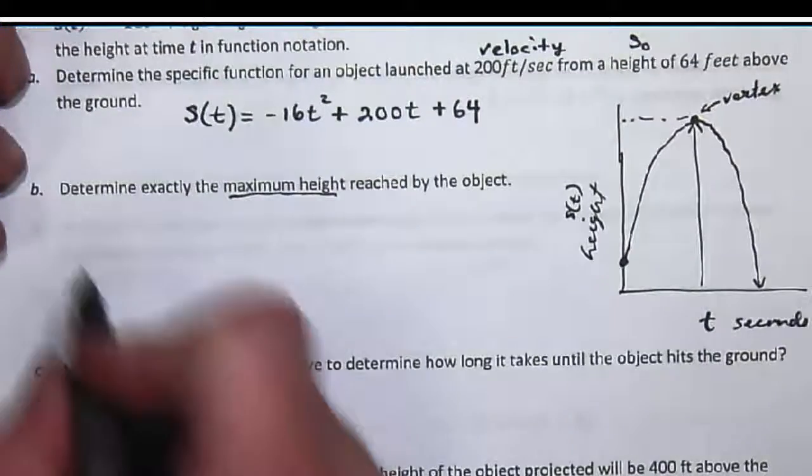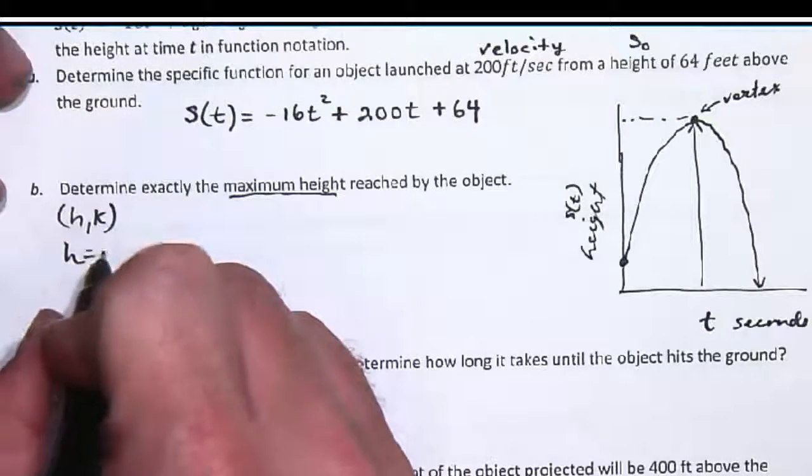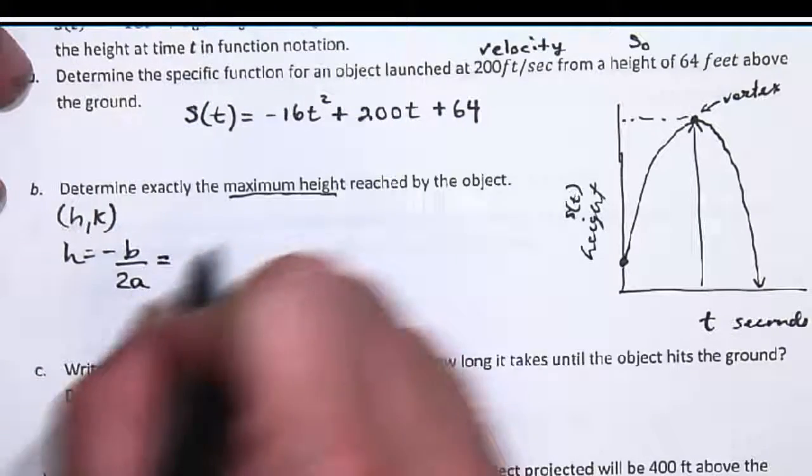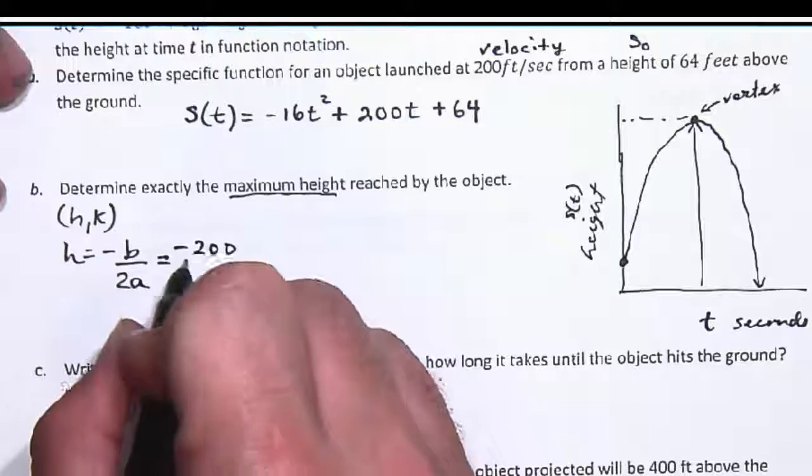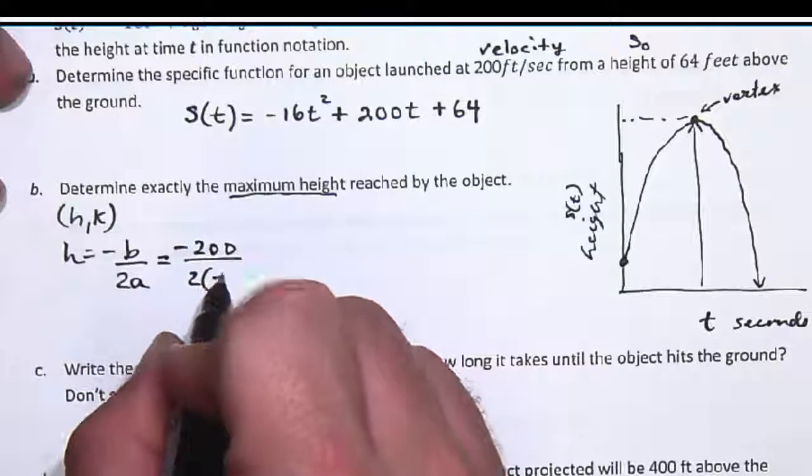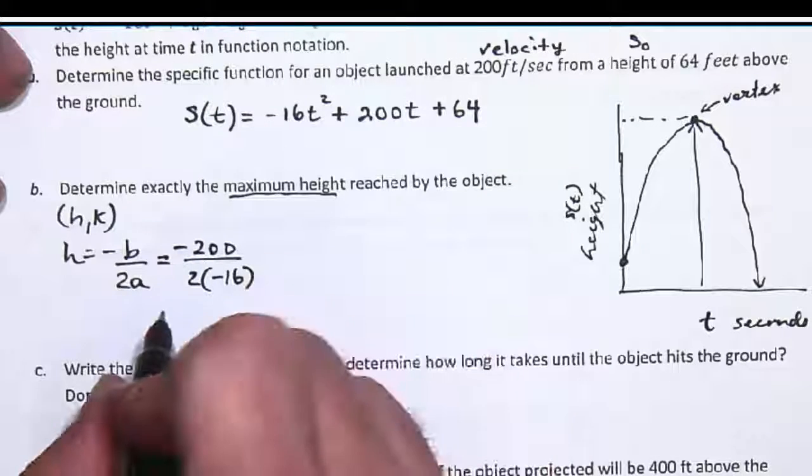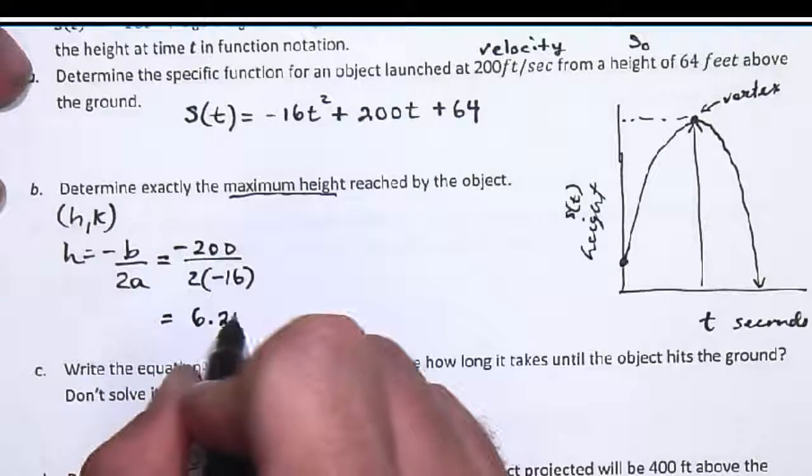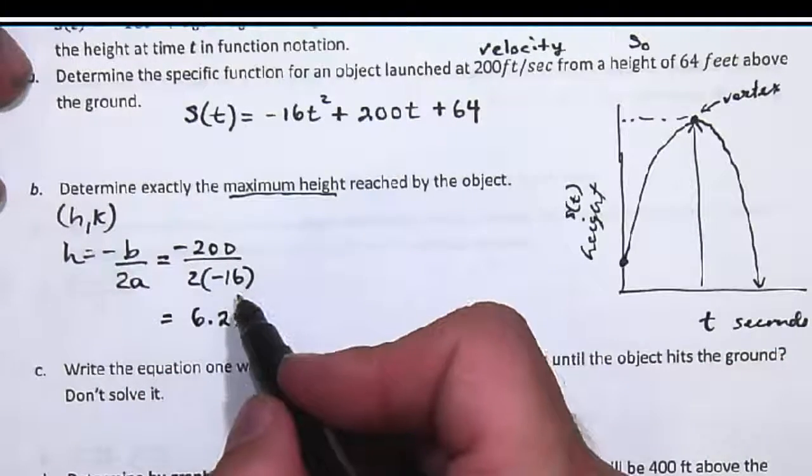To find the vertex, we know the vertex is (h, k). And h is always equal to negative b over 2a. b in this case is 200, so it's negative 200 divided by 2 times negative 16. And if you divide that out, you'll get 6.25 seconds. Let me check that. Yeah, that seems right.